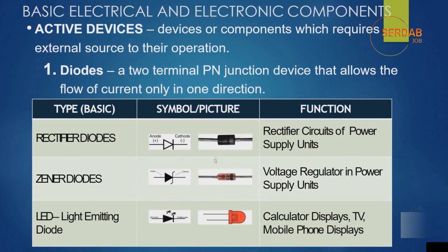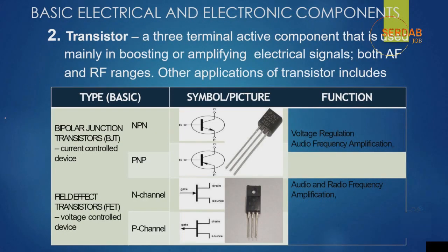Keep in mind that these are the three physical shapes for the rectifier diode, Zener diode, and LED, which are three different shapes of diode. Now, the next active element is the transistor. A transistor is a three-terminal active component used mainly for boosting or amplifying electrical signals in both AF and RF ranges. Other applications include using it as a switch or amplifier for voltage or current signals. This is the physical shape of a transistor.